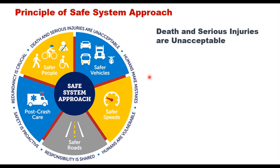The first principle is that death and serious injuries are unacceptable — a safe system approach prioritizes the elimination of crashes that result in death and serious injuries. The second principle is that humans make mistakes. People by nature will make mistakes, and when these mistakes occur on the road they can lead to crashes. Road trauma cannot be eradicated just by improving road user behavior; a safe road system must accommodate and account for people making mistakes.